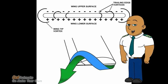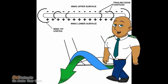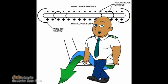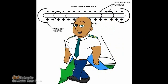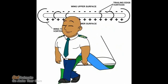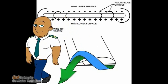Wing tip vortices are caused by pressure differences. A wing producing lift has a lower static pressure on the upper surface than on the lower surface. At the wing tip, the pressure is equalized by air flowing around the wing from the lower part of the wing to the higher part of the wing. This movement of air creates vortices.